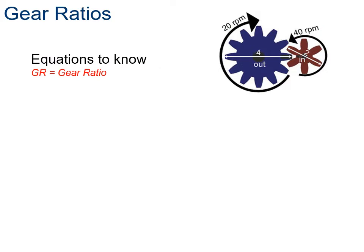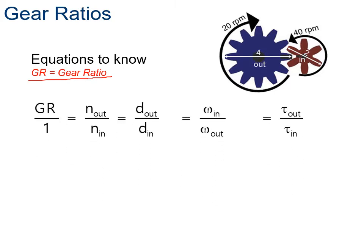The important formulas for gear ratio are all on the formula sheet. Gear ratio equals N-out over N-in (number of teeth in the output over input), which also equals diameter-out over diameter-in, which also equals omega-in over omega-out. Note that omega is the reciprocal - in on top, out on the bottom - unlike the others. Gear ratio can also be calculated as torque-out over torque-in.